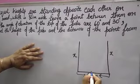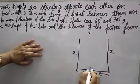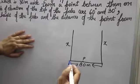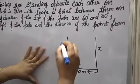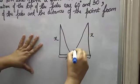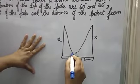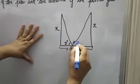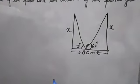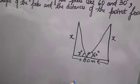From a point between them, suppose here is a point P which is between the road. Angle of elevation of top of the poles are 60 degree and 30 degree respectively. So one angle is 30 degree, one is 60 degree. Find the height of the poles and distance of the point from the poles.